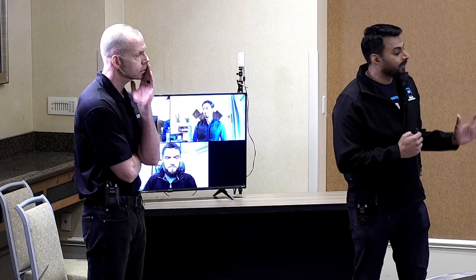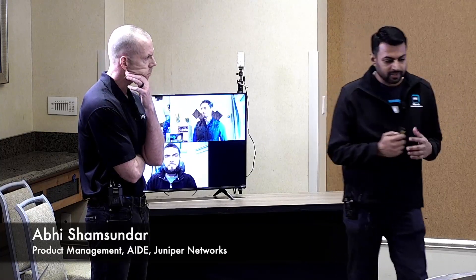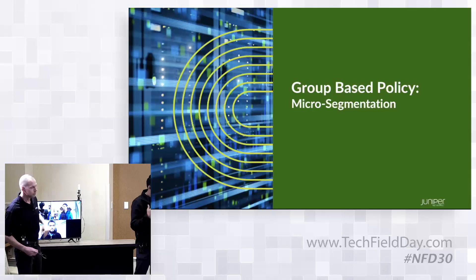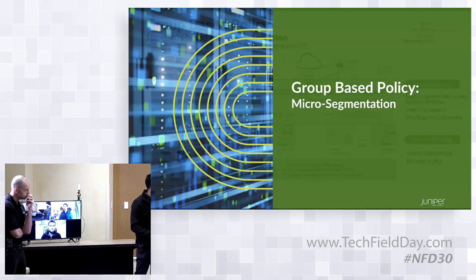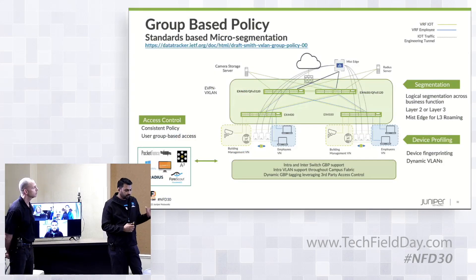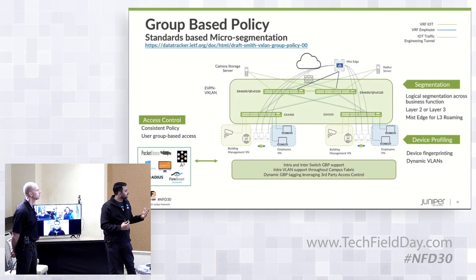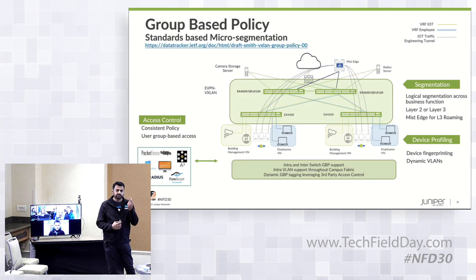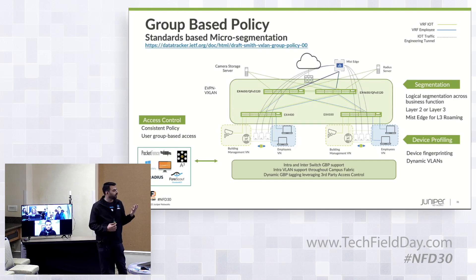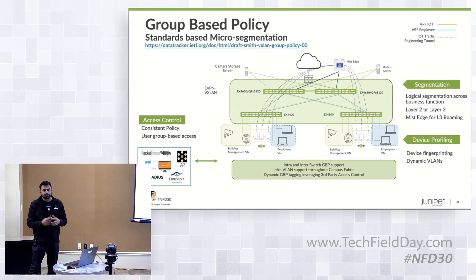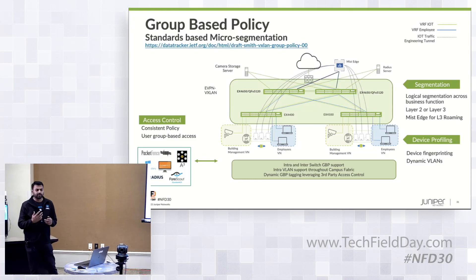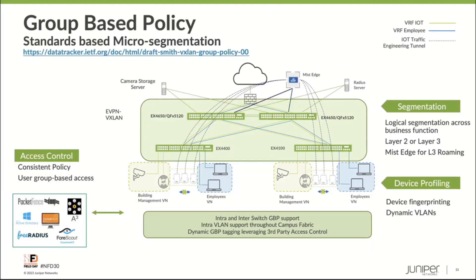There were a lot of questions on group-based policy, so we wanted to spend some time on it — when would you use it, who would want to use it. Group-based policy, or GBP for short, is a simple tag that sits in the VXLAN header. In traditional firewall filters, you could do segmentation based on VLANs and IP subnets, but that resulted in a lot of firewall rules and TCAM exhaustion.